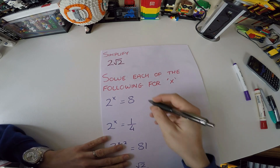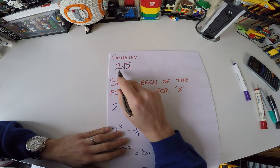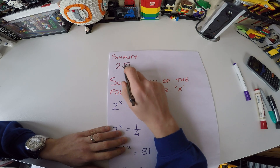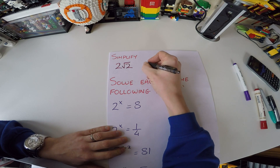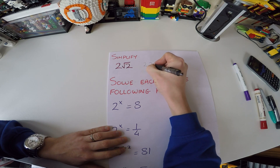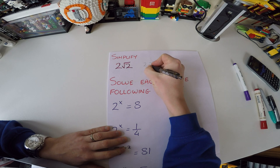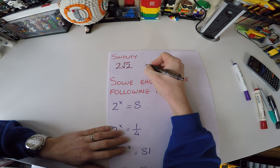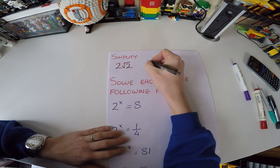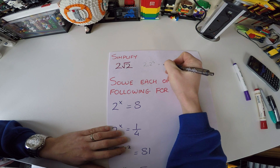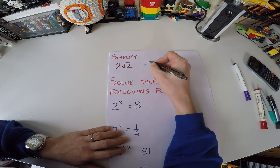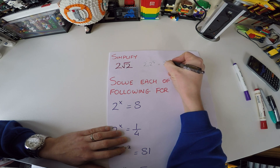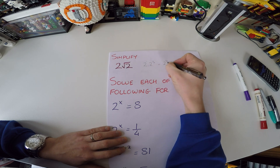Let's look at the first one: simplify 2 multiplied by root 2. The first thing you should have noticed from the last video is that we can change root 2 to 2 to the power of a half. Now it's just a multiplication problem — 2 on its own is effectively 2 to the power of 1. We add 1 and a half to get 1 and a half, which we write as 3 over 2.